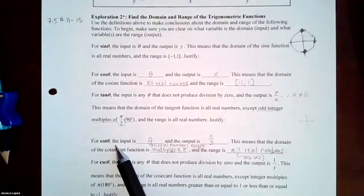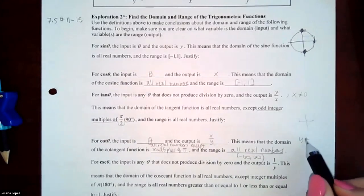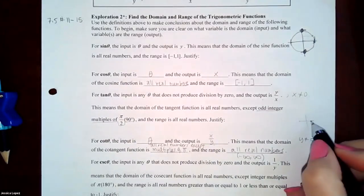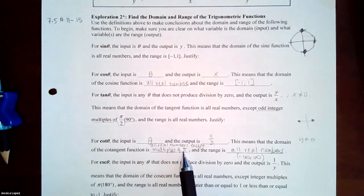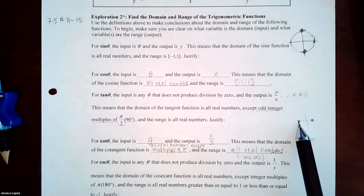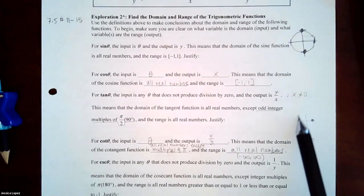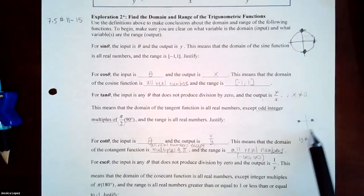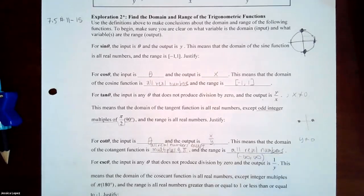For cotangent(θ), the input is theta and the output is x/y, so you must worry about y ≠ 0. That happens at the unit circle points corresponding to all integer multiples of π: 0, π, 2π, 3π, 4π, and so forth. The range is all real numbers for the same reasoning as tangent.